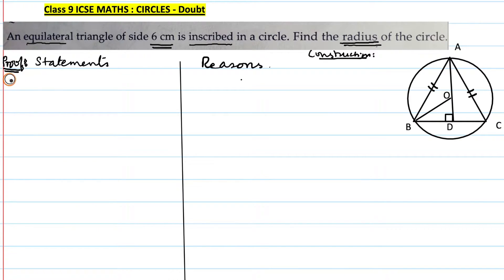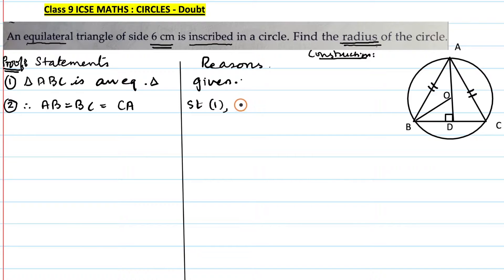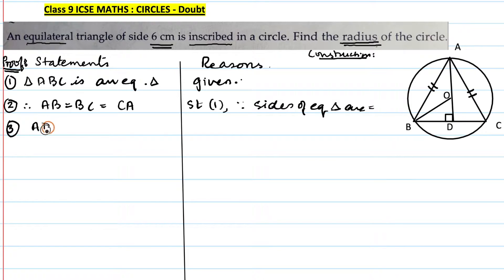The given and what is to be found you will write on your own. Statement 1: triangle ABC is an equilateral triangle — reason: given. Statement 2: therefore AB = BC = CA — reason: sides of an equilateral triangle are equal. Statement 3: AD is perpendicular to BC — reason: construction.